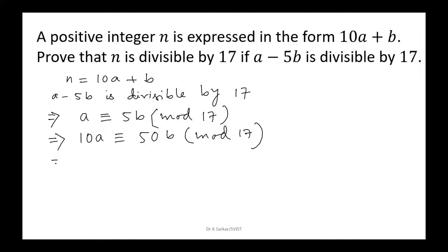Now we can add both sides. Let us add b. 10a plus b is congruent to 50b plus b, that is 51b modulo 17.